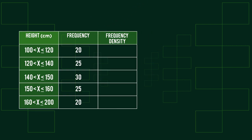Let's see how you did. The first frequency value is 20, which divided by a class width of 20 gives us a frequency density of 1. The remaining values are found like this.